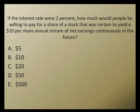If the interest rate were 2%, what do we know from there? The interest rate of 2% says I equals .02. How much would people be willing to pay for a share of a stock that was certain to yield $10 per share, so D equals 10, annual stream of net earnings continuously into the future? So this is one of those things where we just keep getting paid this year.